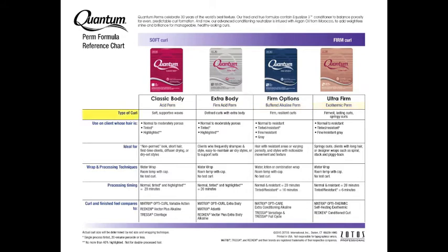The next category is the type of curl that each will achieve. The bulk of the chart gives you information as to how to use the perm and what to expect. At the very bottom are comparisons to other manufacturers.